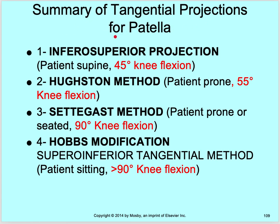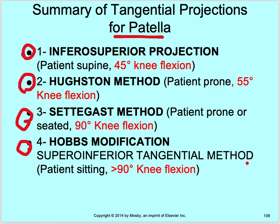This is a summary of the tangential projections for the patella: inferior-superior projection with patient supine, 45 degree knee flexion; Houston method with patient prone, 55 degree knee flexion; Setegast with patient prone or seated, 90 degree knee flexion; and Hobbs modification superior-inferior with patient sitting, 90 degrees or greater knee flexion. Keep in mind the more you flex that knee, the more it will pull the patella down into the patellar-femoral joint space. Go back over all four so you understand the setup, flexion, and angle — then we'll continue on to the pelvis.